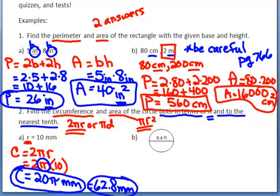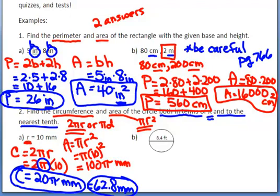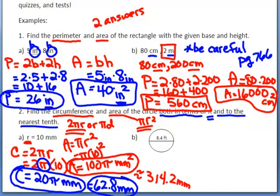For area: A equals pi times the radius squared, which is pi times 10 squared. Order of operations says square first: 10 squared equals 100, giving 100π. The label is millimeters squared because it's an area formula. To the nearest tenth, 100 times pi equals 314.15, which is approximately 314.2 millimeters squared.